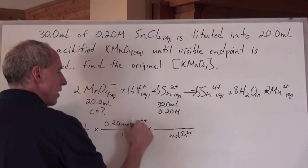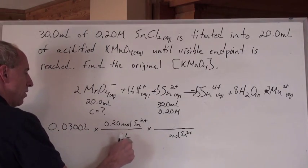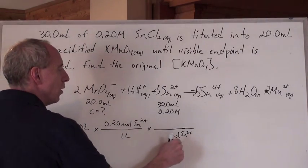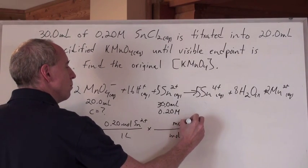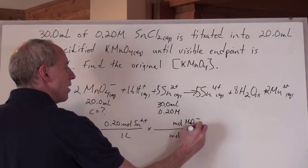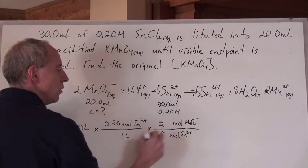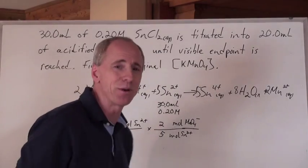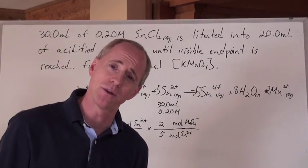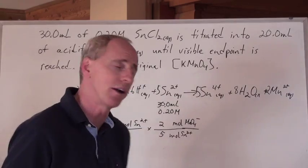What's the ratio of moles of Sn²⁺ to moles of permanganate ion? It's 5 to 2. So it's 5 here and 2 here. There you go. See, that's the ratio that you were looking for in the balanced reaction. You just can't do the math without the ratio there.